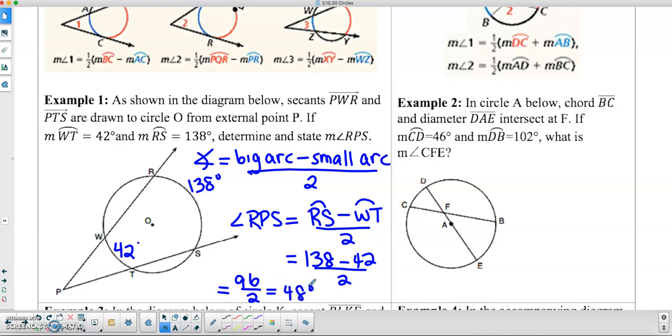So in this case, the measure of angle RPS is 48 degrees. Now, looking at the next example, these are your two chords. So instead of subtracting the arcs, we're actually going to add them together.